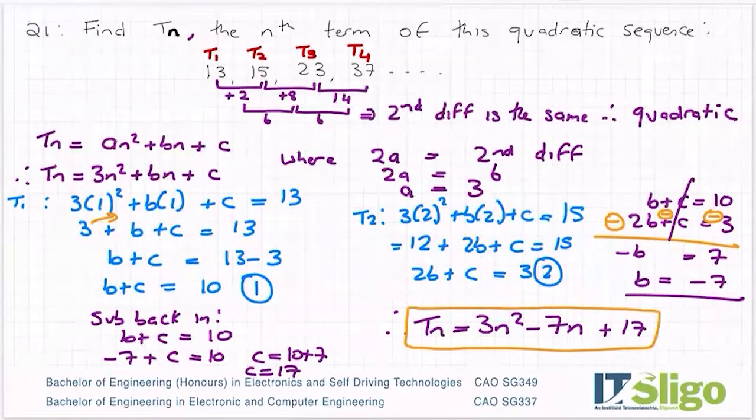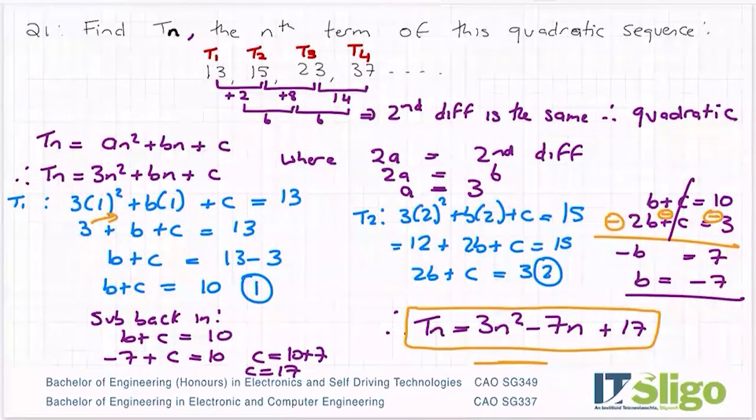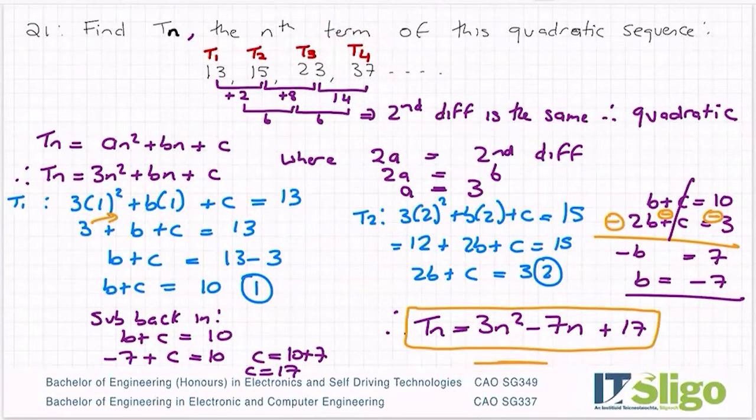Of course, you can always test it. You can always sub in four, for example, for n into your formula, and see if you get 37. And I'm just doing that there now. So minus 7 times 4 plus 17. And I do actually get 37. Although it didn't feel right for some reason when I was doing it, it is actually correct.